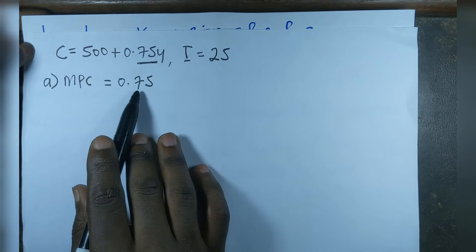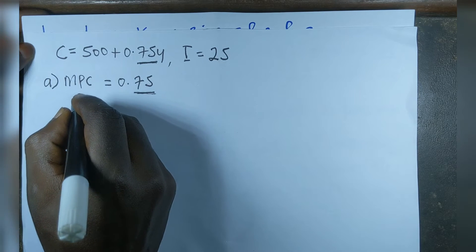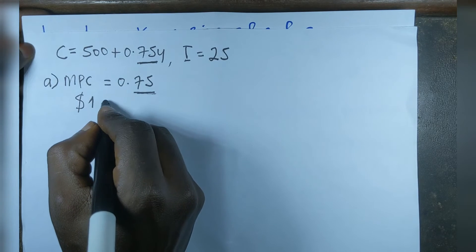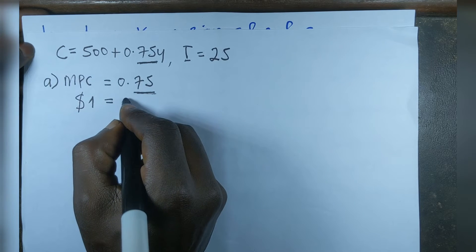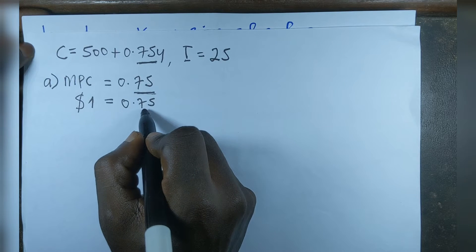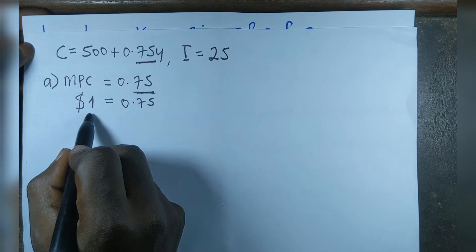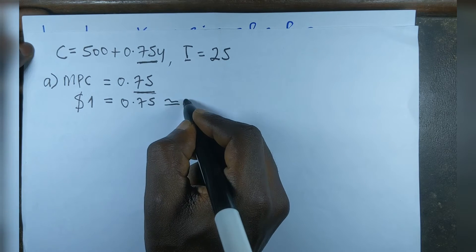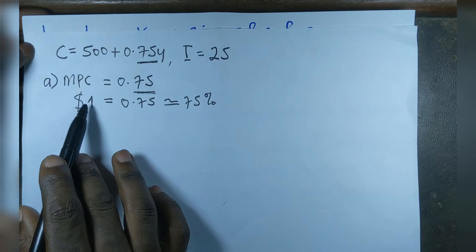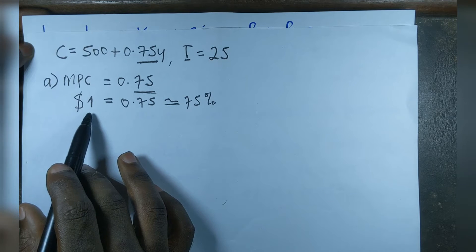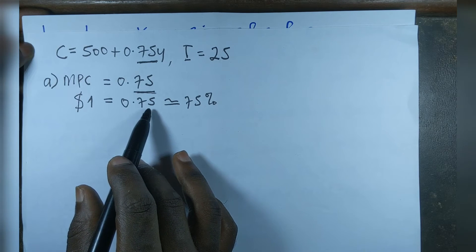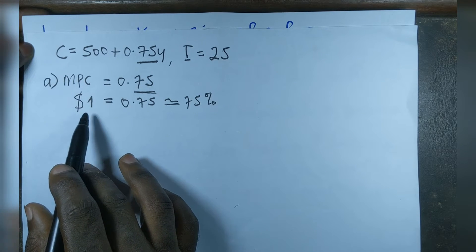To interpret the value of MPC: for every one dollar increase in income, the marginal propensity to consume will increase by 0.75. Converting to a percentage, for every increase of one US dollar in income, consumption will increase by 75 percent. So MPC equals 0.75, or 75 percent of that one US dollar increase in income.